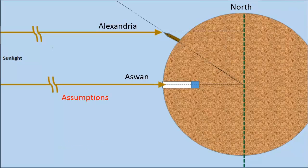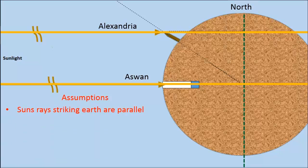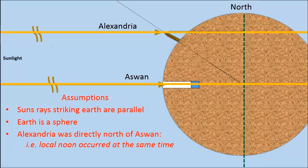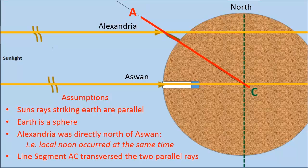The model makes four key assumptions. First, the sun's rays striking earth at Aswan and Alexandria are parallel. The earth is a sphere. Alexandria was directly north of Aswan, that is, local noon occurs at the same time. Lastly, line segment AC transverses the two parallel rays. Let's look at these assumptions.